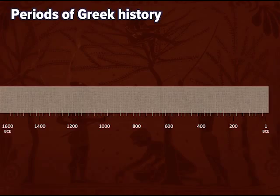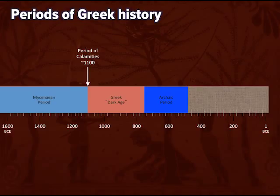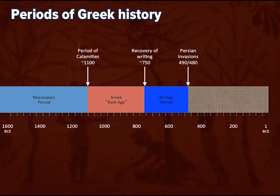Just to recap, these are the periods of Greek history that we're involved with. We've already dealt with the Bronze Age and Mycenaean period. The Bronze Age is succeeded by the Greek Dark Age, and then the period we're now dealing with is the Archaic Period. The transition point is the period of calamities and collapse of the Bronze Age around 1100.